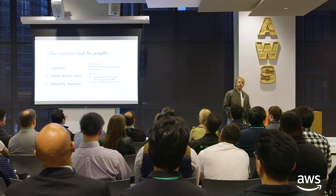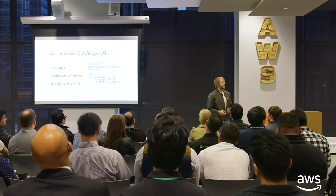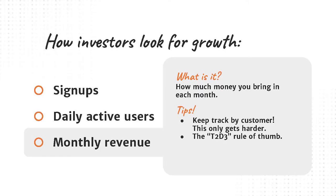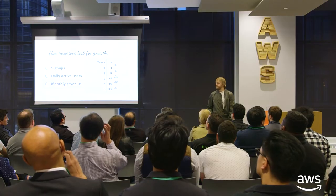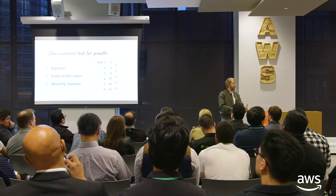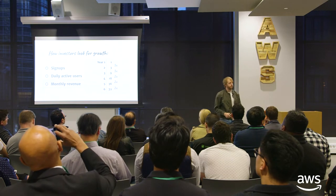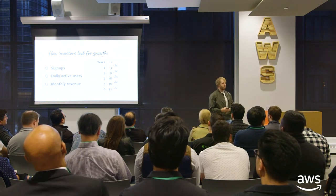To give you a benchmark for monthly revenue: a lot of VCs evaluate growth on the concept of the T2D3 rule. This is the growth pattern investors want to see — in your first year revenue triples, second year it triples again, and then the third, fourth, and fifth years you double. That's the 'T2D3' bit. This is the pace that's a sign of a good growing company that Silicon Valley investors will be interested in. You don't actually have to hit this — there are plenty of ways to raise money without being on this path — but it's roughly what people expect.